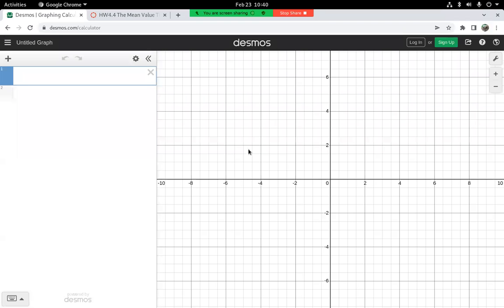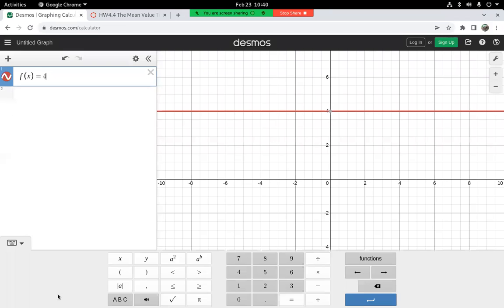So our original function f of x is equal to 4 times the square root of x plus 1.